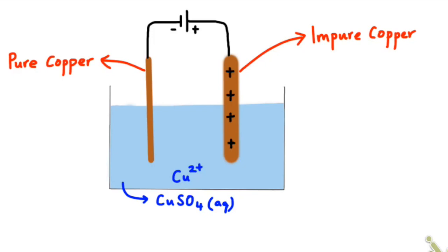Now, the positive end of the battery is connected to the impure copper electrode, making that positive and the pure copper electrode negative. Let's focus on the impure copper electrode. At that electrode, a copper atom will lose two electrons to form copper two plus ions.